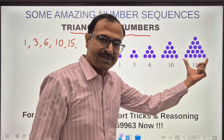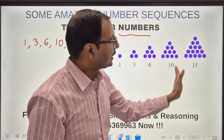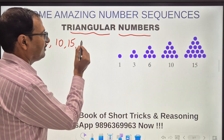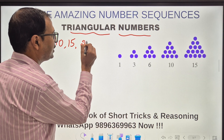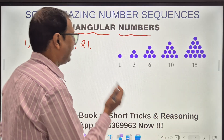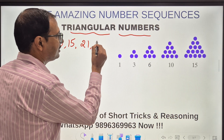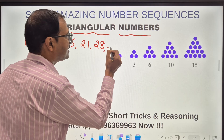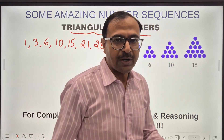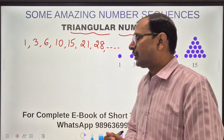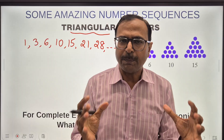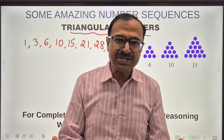We have five dots in the last row, so the next row will contain six dots. 15 plus 6 gives us 21 — that is 21 will be the next triangular number. Likewise, 7 more dots will make it 28, and this sequence is going to continue on and on. These are called triangular numbers. Now, how do we interpret these triangular numbers and what are the special properties which actually make them special?